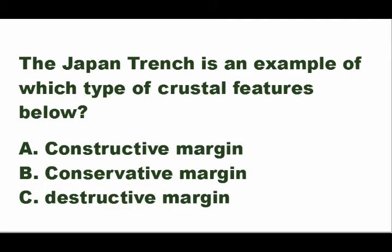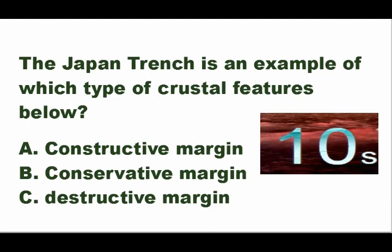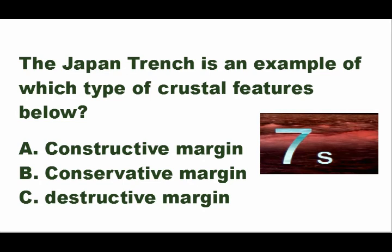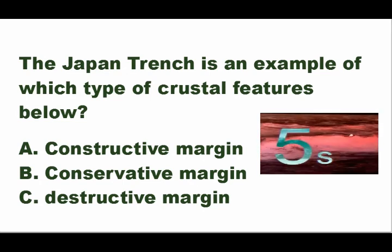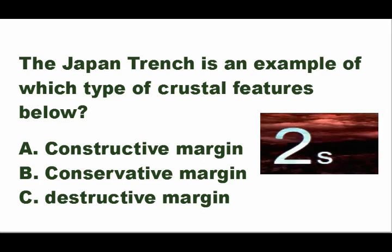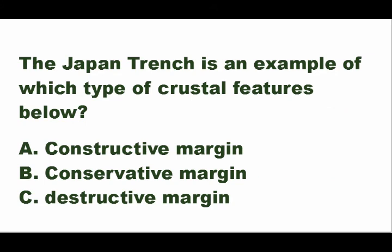Next: the Japan Trench is an example of which type of crustal feature? Is it A — constructive margin, B — conservative margin, or C — destructive margin? The answer is letter C — destructive margin.